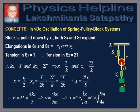Therefore, we have T = 2Kx/5. When released, the restoring force on the block is equal to the tension in the spring S2, which gives F = 2T = 4Kx/5. Therefore, acceleration of the block is a = F/m = 4Kx/5m. And the time period of oscillations is t = 2π√(x/a) = 2π√(5m/4K).